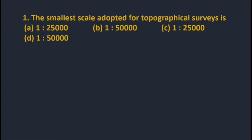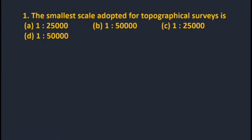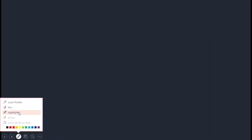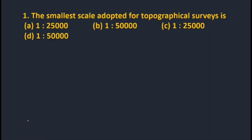Our first question: the smallest scale adopted for topographical survey. As I discussed during our lectures, the smallest scale for topographical survey is 1:2,50,000. So the correct option is 1 in 2,50,000.